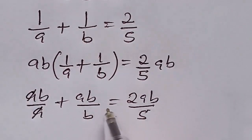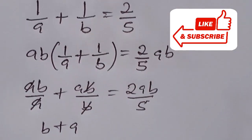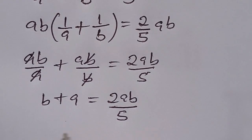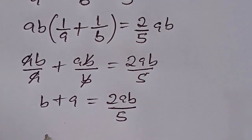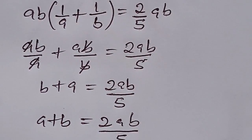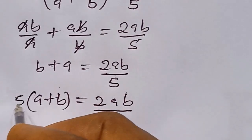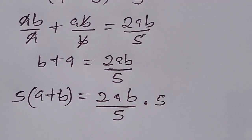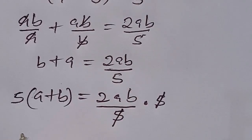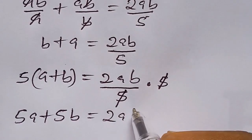Now we have ab over a plus ab over b equal to 2ab over 5. We have the a's to cancel out and the b's to cancel out. Then we have b plus a equal to 2ab over 5. Now we can write this as a plus b equal to 2ab over 5. Now we multiply both sides by 5, giving us 5a plus 5b equal to 2ab.